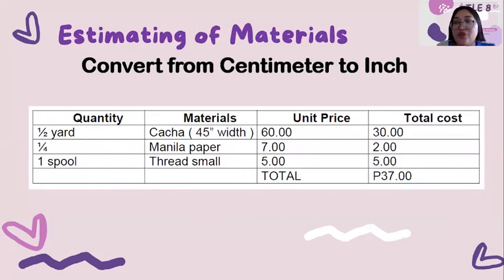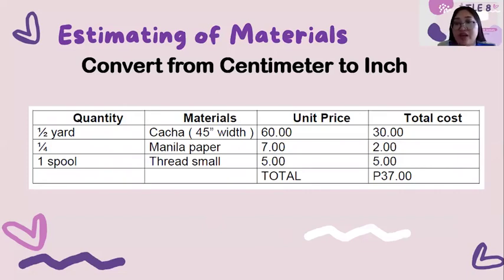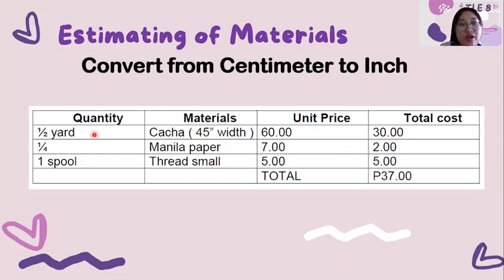In estimating, we must know the size and the number of products we make, and the size of the cloth, if it is 36 inches, 45 inches, or 60 inches width. For example, an organizer measuring 12 inches by 30 inches with three patch pockets of different designs — for one yard of 45 inches width, you can make two organizers. So for one organizer, you can use one half yard of cloth with a unit price of 60 pesos. Since you'll be using one half yard, the total cost is 30 pesos.